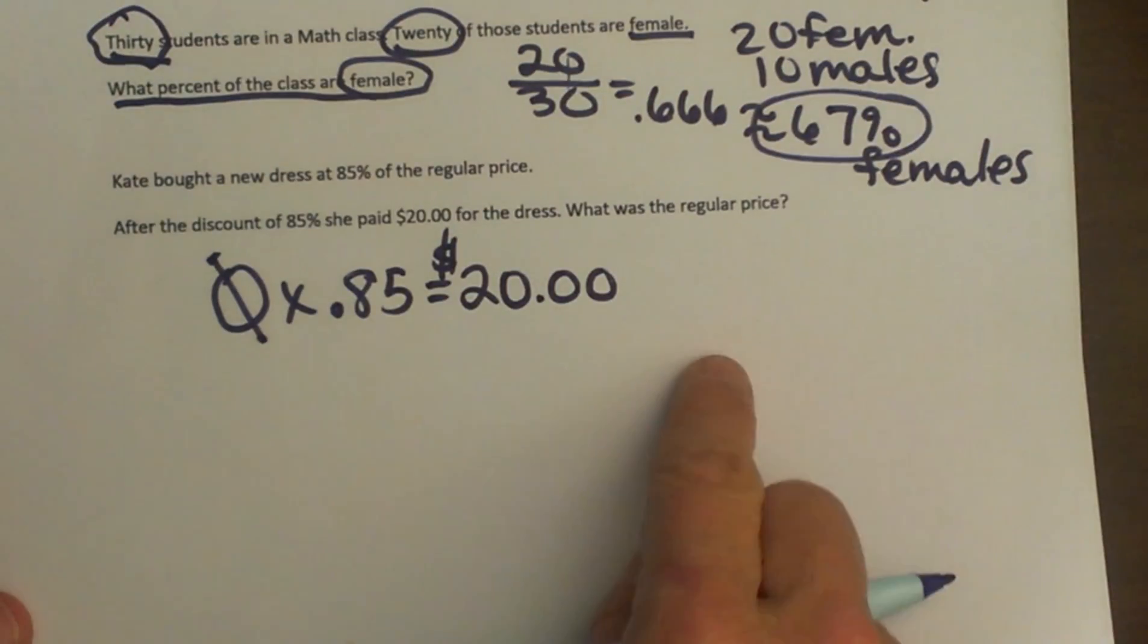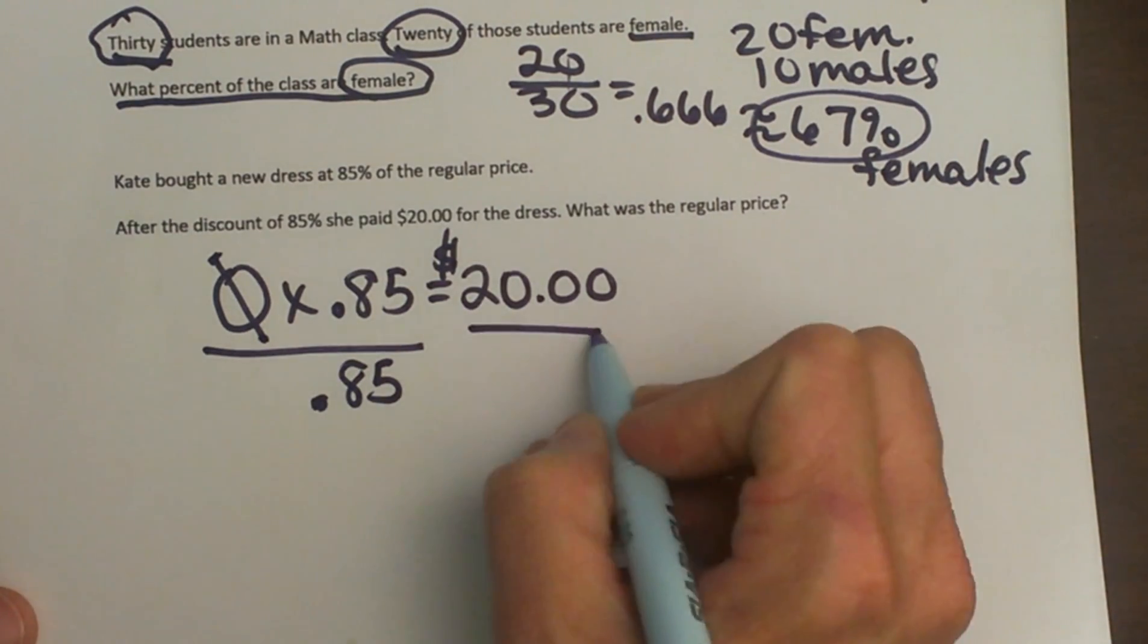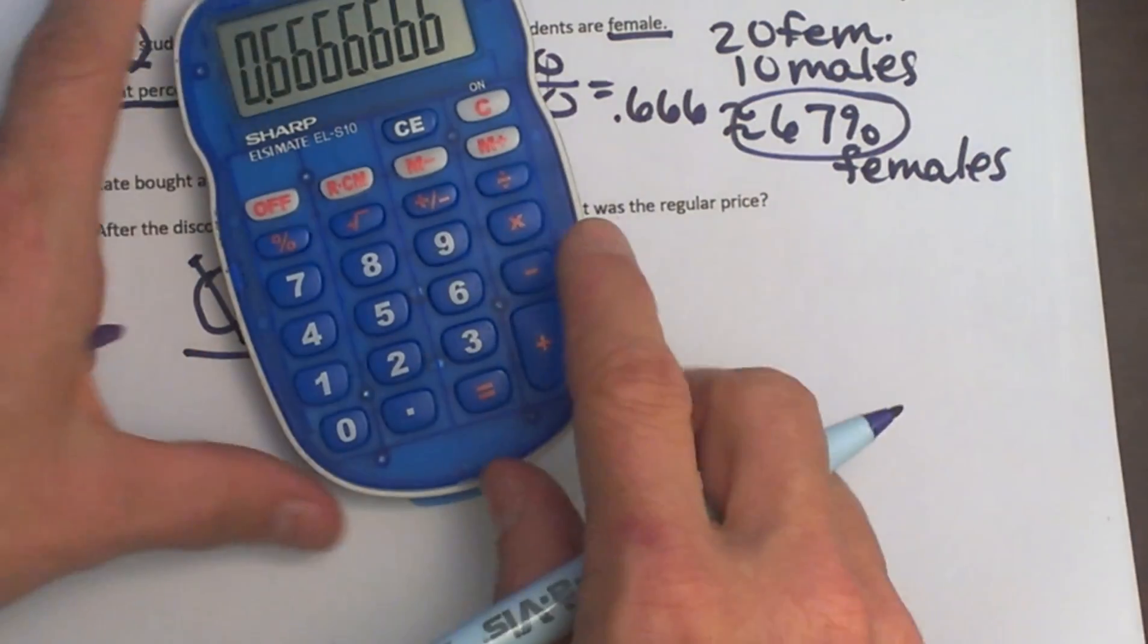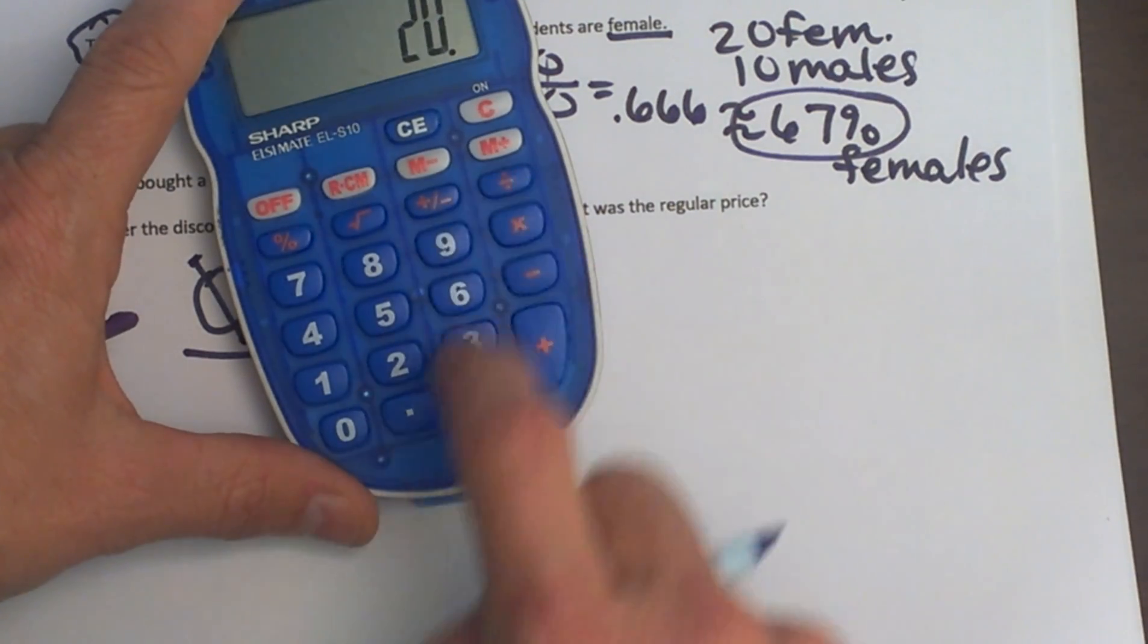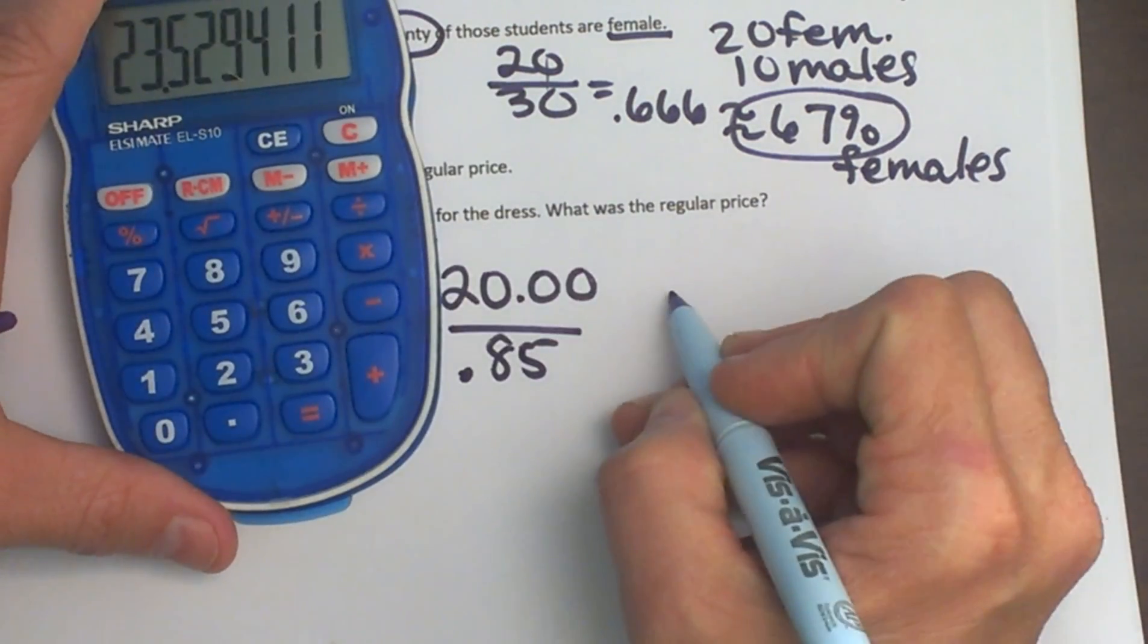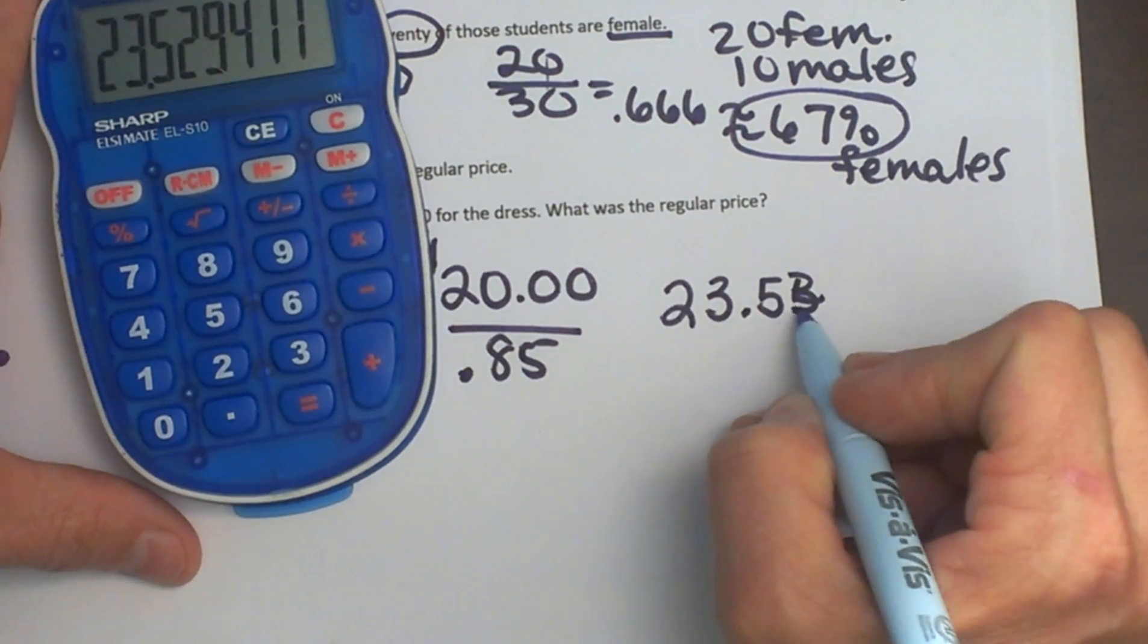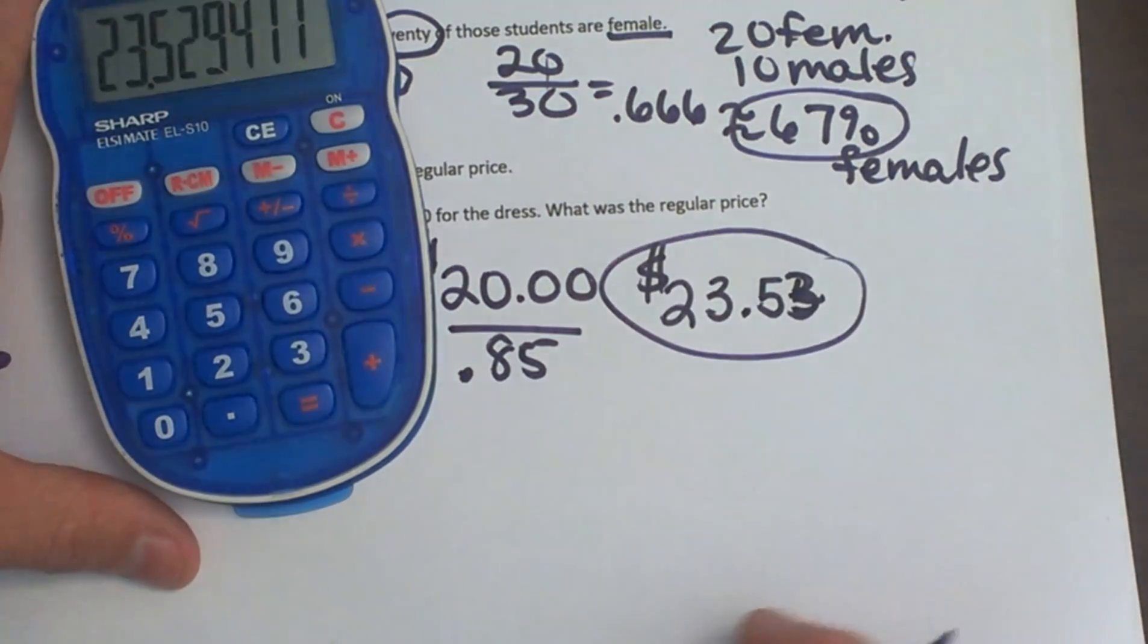How do we undo this problem? We divide both sides by 0.85 to isolate the original price. So let's take 20 and divide it by 0.85 since it is a percent. So that means the original price was $23.53. And that is how you find the answer.